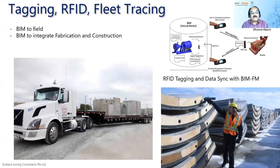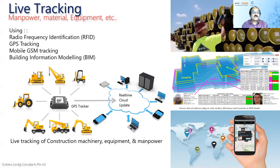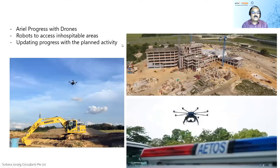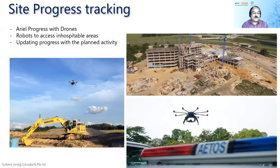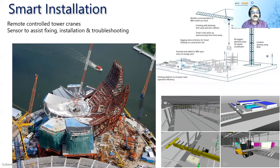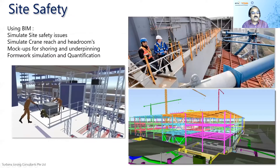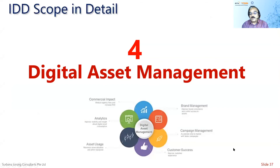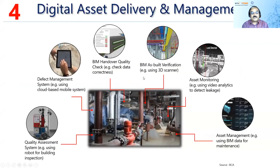In digital construction we can use RFID technology to manage and monitor pre-constructed components from the factory. We can do live tracking using digital geofencing to track people and machinery. Drones are also part of IDD for site progress tracking and monitoring. Smart installation using sensors allows equipment like cranes to communicate and prevent accidents. IDD processes include simulations of how to carry a component from one floor to another, all critical for site safety.